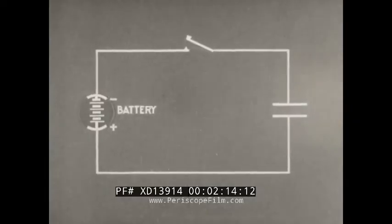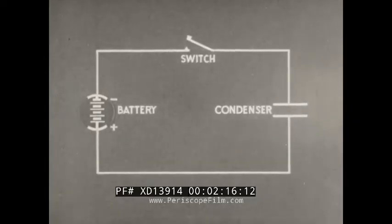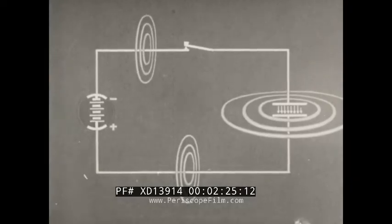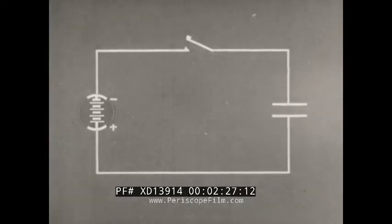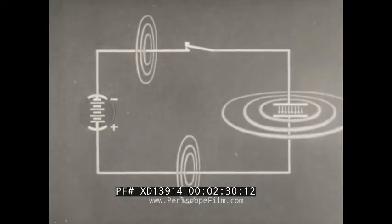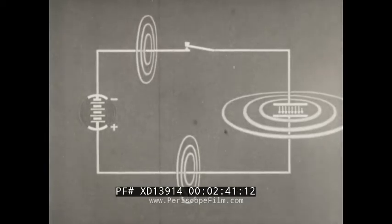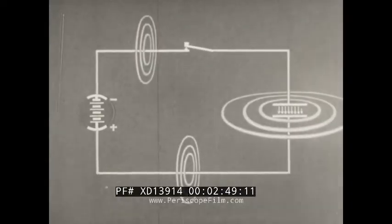In a hookup consisting of a battery, switch, and condenser, maximum current flows the instant the switch is closed, resulting in the creation of a magnetic field at the instant of closing the circuit. This magnetic field remains around the conductor as current flows. When the plates of the condenser are fully charged, current ceases to flow. The magnetic field around the condenser and conductors collapses as current diminishes. The condenser is then a charged object, and a dielectric field is built up around it as the charge accumulates.